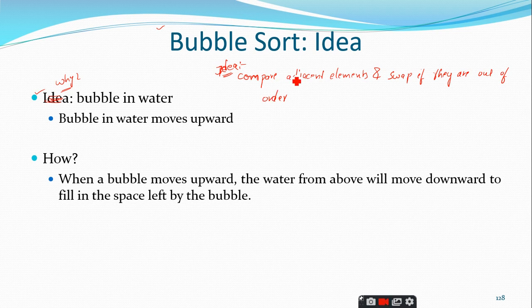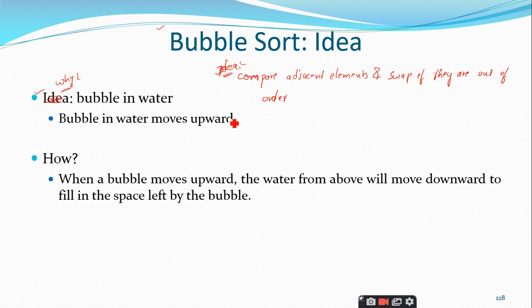That means you compare adjacent elements and if they are in the correct order — for example in ascending order, if the adjacent elements are already in ascending order — you just leave them. But if the adjacent elements are not in ascending order, you swap those two elements. This is the basic idea behind bubble sort.